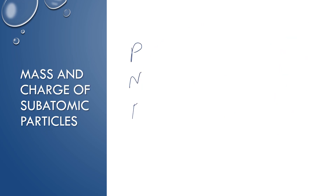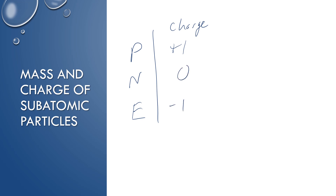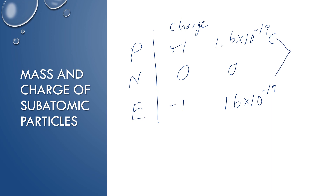Let's look at all three subatomic particles: protons, neutrons, and electrons, and talk about their relative charge. Protons have a positive one relative charge. Neutrons are neutral, and electrons have a negative one relative charge. If we were using coulombs to measure the charge, the charge of a proton is 1.6 × 10⁻¹⁹ coulombs. A neutron is still zero, and an electron's charge is 1.6 × 10⁻¹⁹ coulombs in the opposite direction. The two charges are the same in magnitude but opposite in direction.